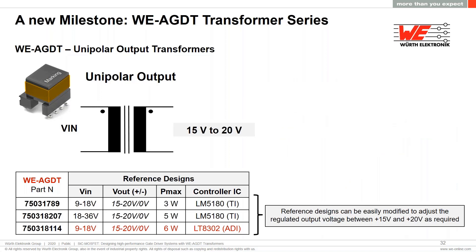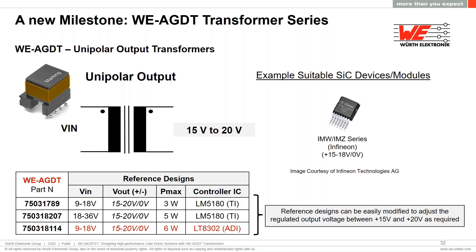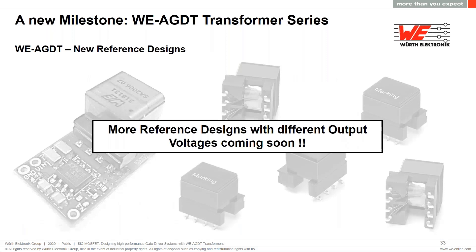There are also three WE-AGDT transformers available with unipolar output voltage rail configuration. The output voltage can be adjusted from 15 V to 20 V as required, covering an input voltage range from 9 V to 36 V and output power up to 6 W. The reference designs feature a 19 V output voltage, but this can be modified as needed. An example device series recommending a unipolar gate drive voltage in its datasheet is shown for reference. More reference designs with different output voltages will be coming soon.